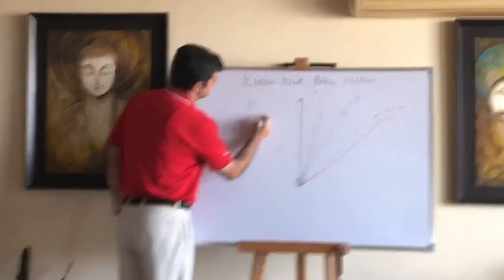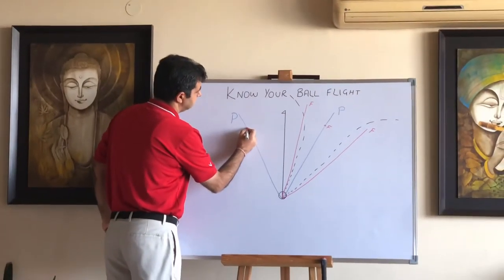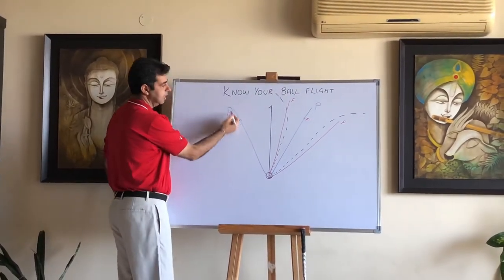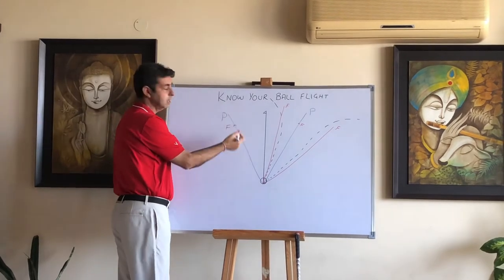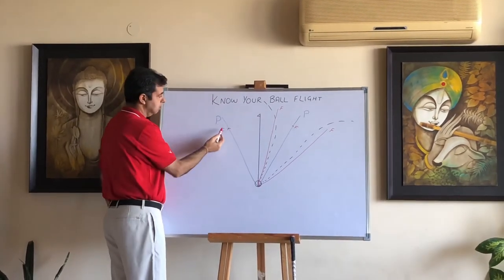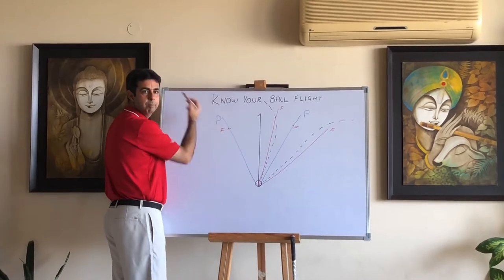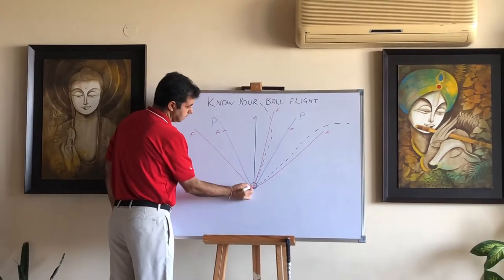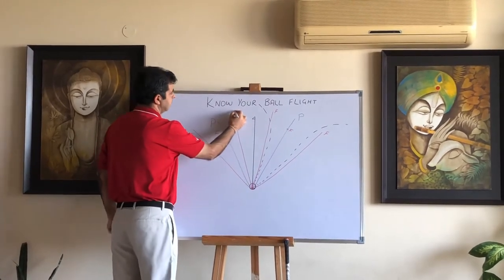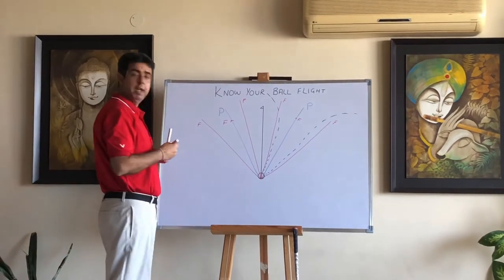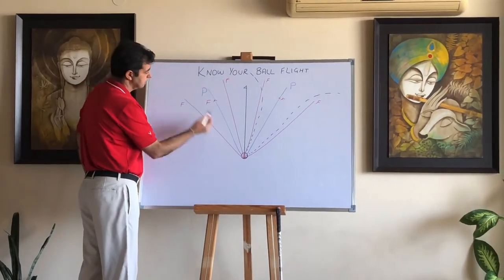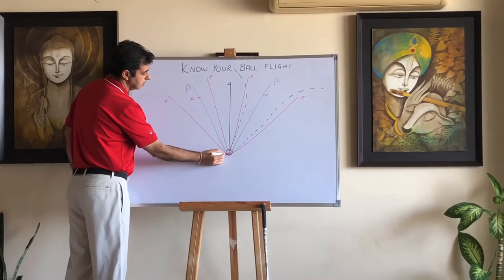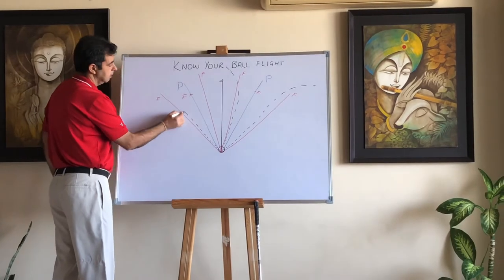Now applying the same criteria to the out-to-in path. First: if the face equals the path, the ball starts exactly on that out-to-in line and goes straight without any curve — the ball starts left of target and goes straight left. That's a pull to the left. Next, what if the face is more left of the path, and what if the face is slightly right of the path? Applying the same three rules: ball starts between the two, starts closer to the face, and curves away from the path.